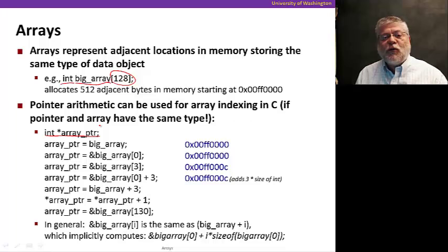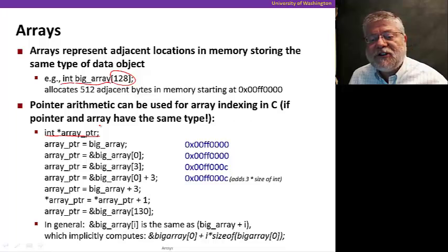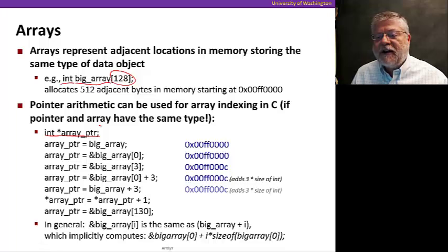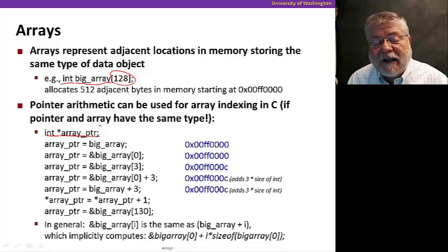Now, that's exactly the same thing as the next statement. In this case, what I've done is first taken a pointer to the first element and then said add three. But remember, C knows that if we're adding to a pointer, we multiply by the size of the data element, three times four.